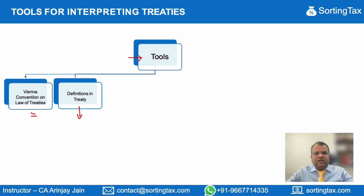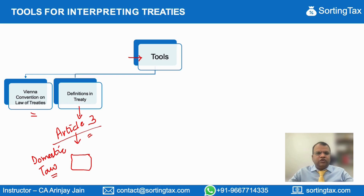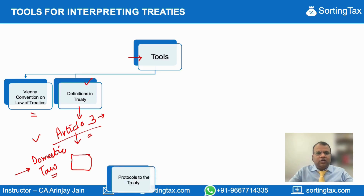The second is the definitions in a treaty. Every treaty in Article 3 contains certain definitions. And generally, at the end, Article 3 also provides that terms which are not defined in the treaty can be referred to by the domestic tax laws if a definition is given there. So when interpreting a treaty and trying to see what a particular word means, one should look at Article 3. If the word is defined here, nothing like it. If the word is not defined here but this mentions that one can make a reference to the domestic tax laws, that's what one should look out for.